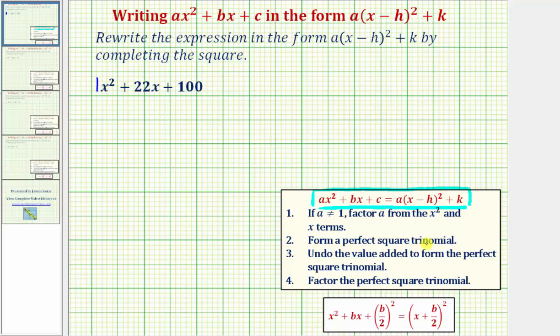Step two we want to form a perfect square trinomial. To do this let's set this up as x squared plus 22x and then we'll add a constant here that'll make this a perfect square trinomial. So we still have plus 100. Whatever constant we add here to maintain equality we'll also have to subtract it here.